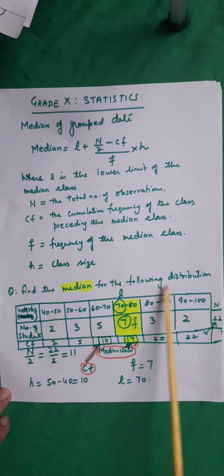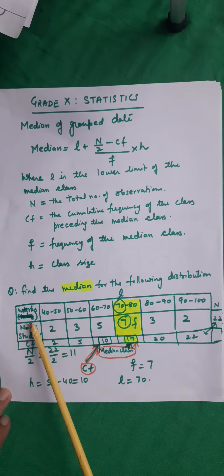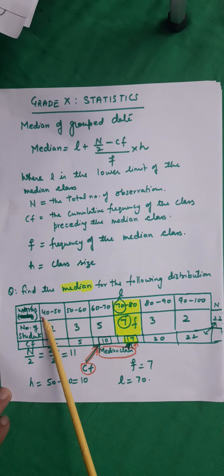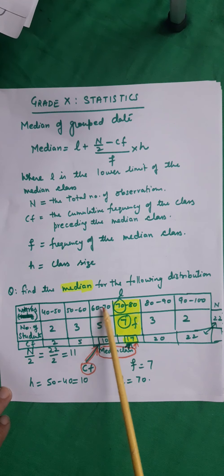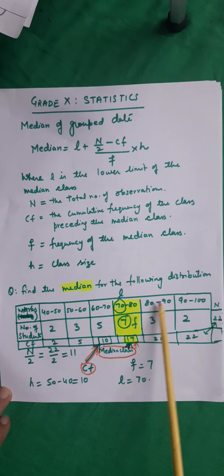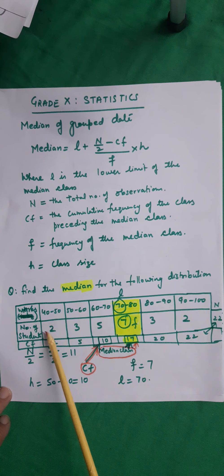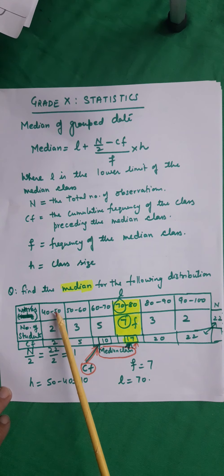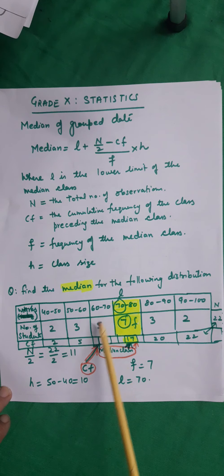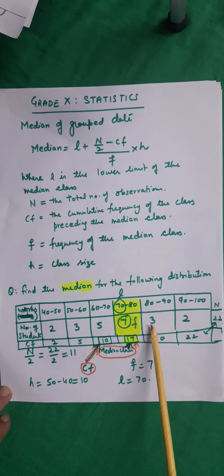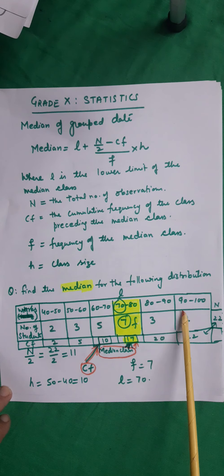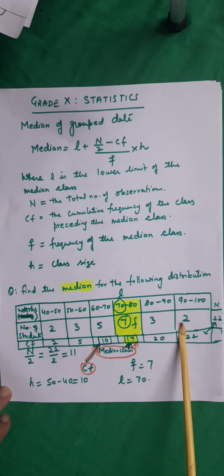Find the median of the following distribution. The marks range is given as 40–50, 50–60, 60–70, 70–80, 80–90, and 90–100. The number of students in each interval are: 2, 3, 5, 7, 3, and 2 respectively.